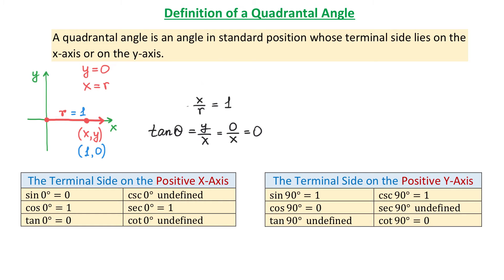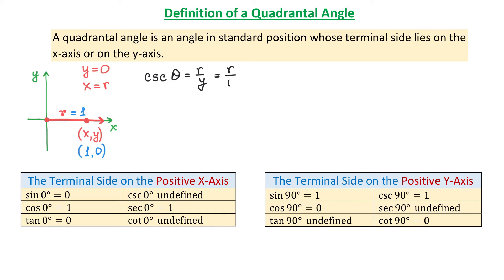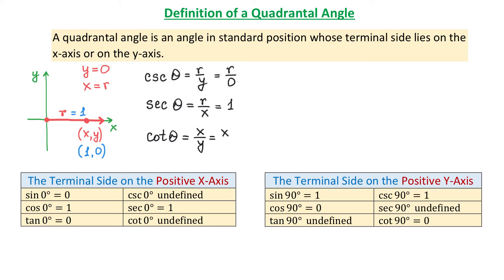Now let's talk about cosecant, secant, and cotangent. Cosecant by definition is r/y, and because y is 0, division by 0 is undefined. So cosecant of 0° is undefined. Secant(θ) is r/x, and because r and x are the same, we get 1. So secant of 0° equals 1. Cotangent(θ) by definition is x/y, and because y is 0, x/0 is undefined. So cotangent of 0° is undefined.